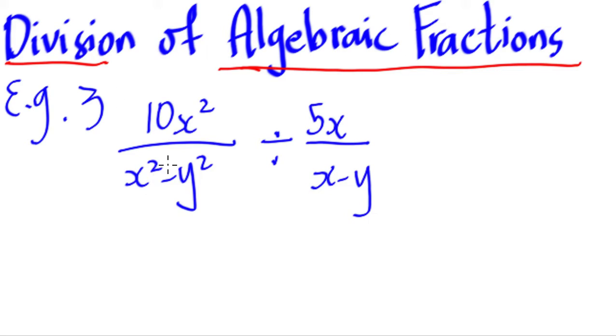And what we have is, I'm just going to read it again. We have 10x squared all over x squared minus y squared divided by 5x all over x minus y. So first up,